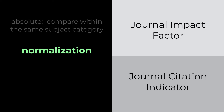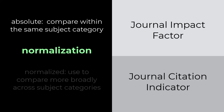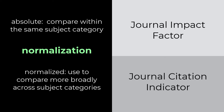An absolute metric like the JIF is best used to compare journals within the same subject category because citation patterns differ across fields, while a normalized metric like the JCI allows for comparison more broadly across subjects.